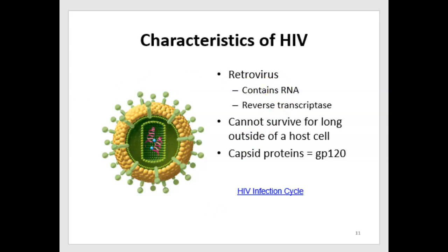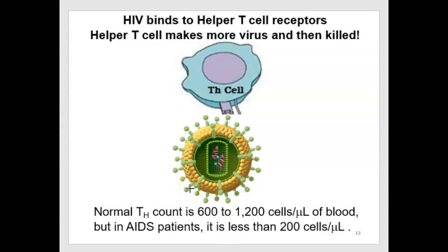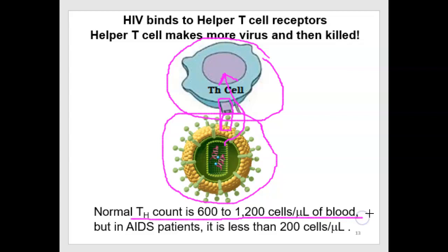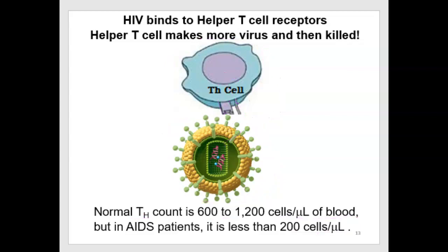What's particularly terrible about HIV and the reason it's so virulent is because it binds to helper T cells and infects them. The capsid protein can bind to the T cell receptor, enabling the virus to insert its RNA inside the helper T cells. The helper T cell is then going to get destroyed as it produces more viruses and viral proteins and bursts. We see a drop from a normal helper T cell count of 600 to 1200 cells per microliter down to less than 200 cells per microliter in a patient who has AIDS.